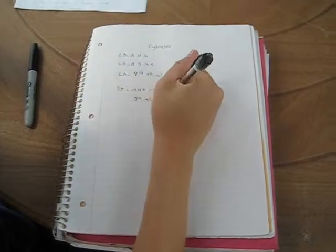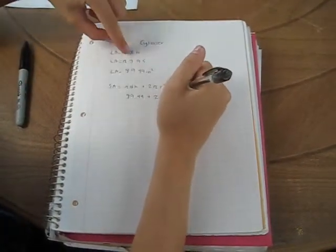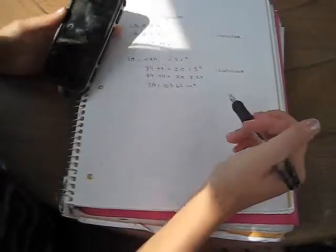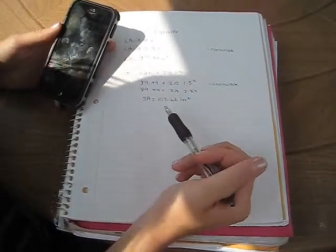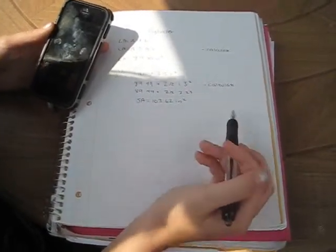To find the base area, you do 2 pi. And since the radius is half of the diameter, it would be 1.5 squared. After calculating, the surface area of the Pringles cylinder is 103.62 inches squared.